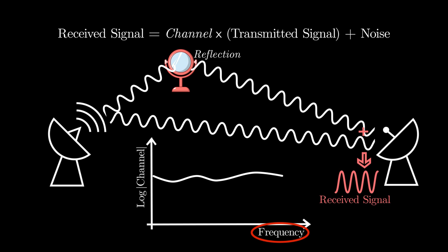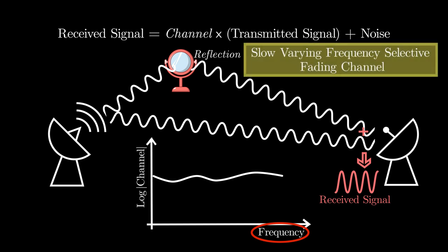Therefore, this type of channel is called slow-varying frequency-selective fading channel. Slow-varying because the channel doesn't vary with respect to time, since none of the objects are moving here. Frequency-selective because the channel varies with respect to frequency.